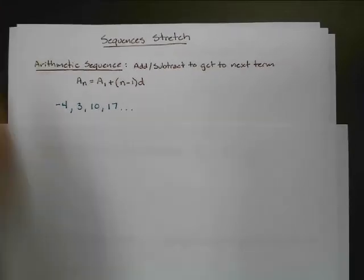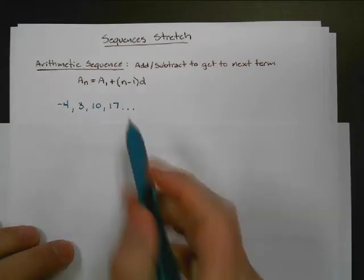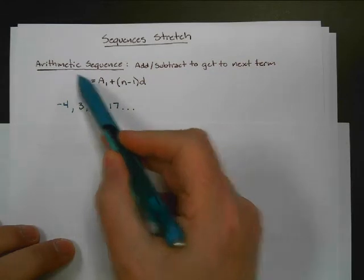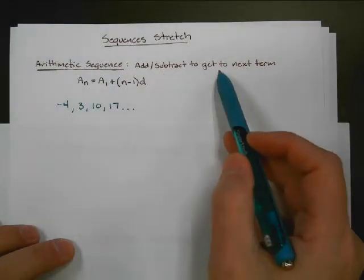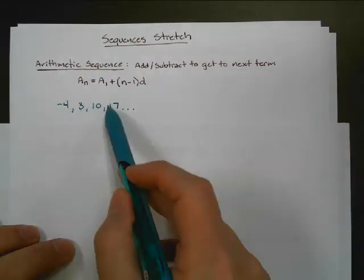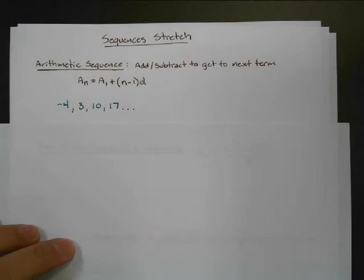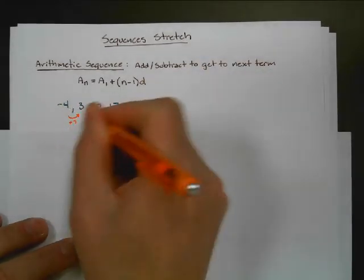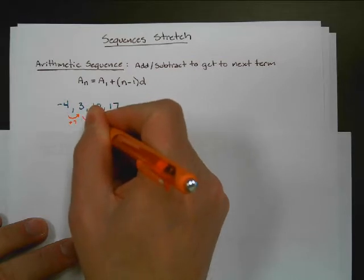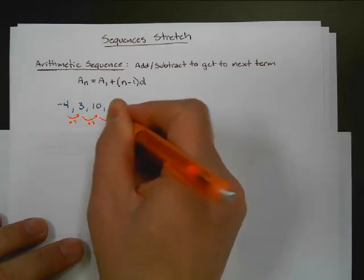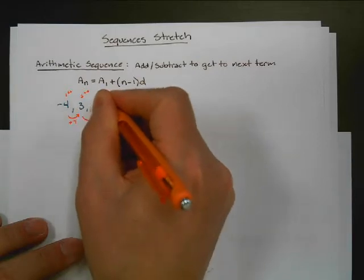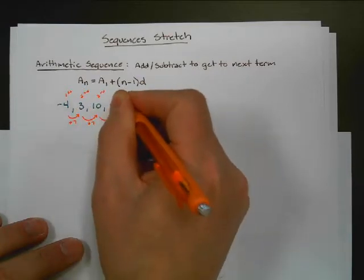So here I've got a sequence: negative 4, 3, 10, 17, dot dot dot, meaning that this sequence is going to keep on going. Now, when it's an arithmetic sequence, you're going to add or subtract to get to the next term. So these are all terms, and we can see here that we are adding 7 each time. That's what makes it arithmetic. This is my first term, second, third, and fourth, and then it's just going to keep on going infinitely.